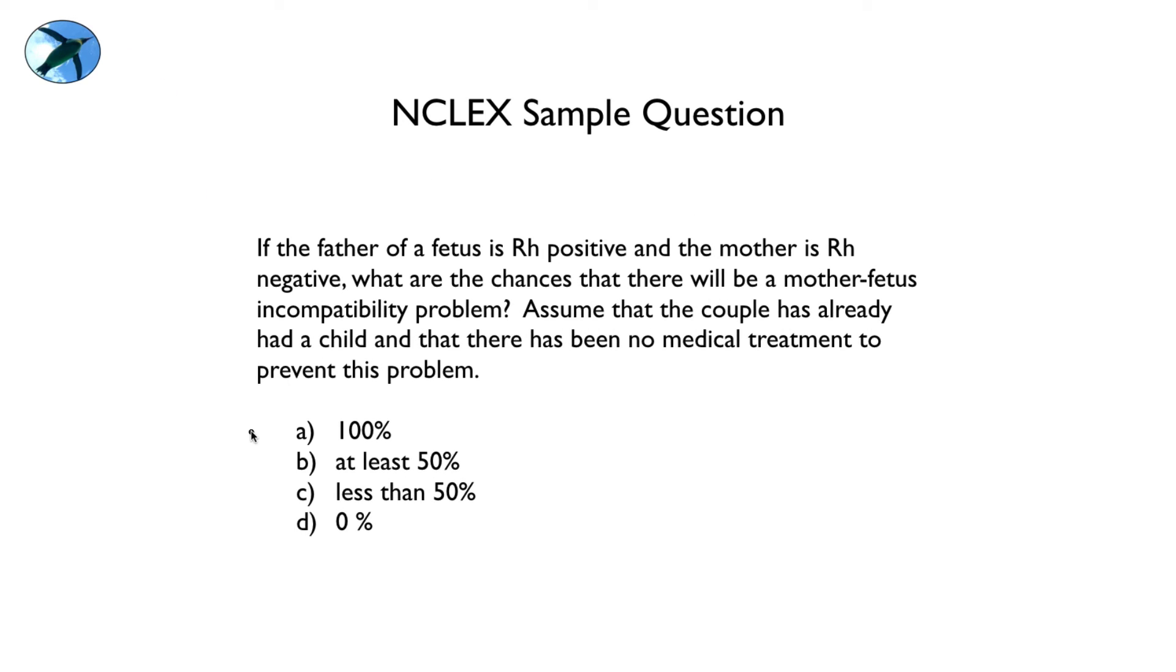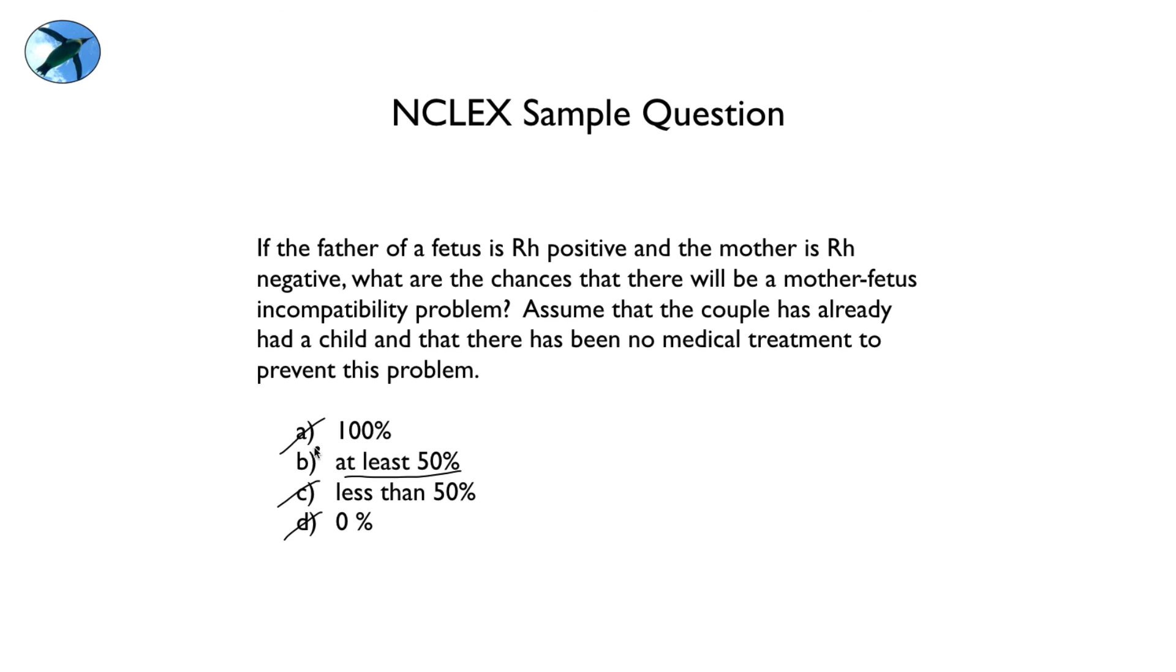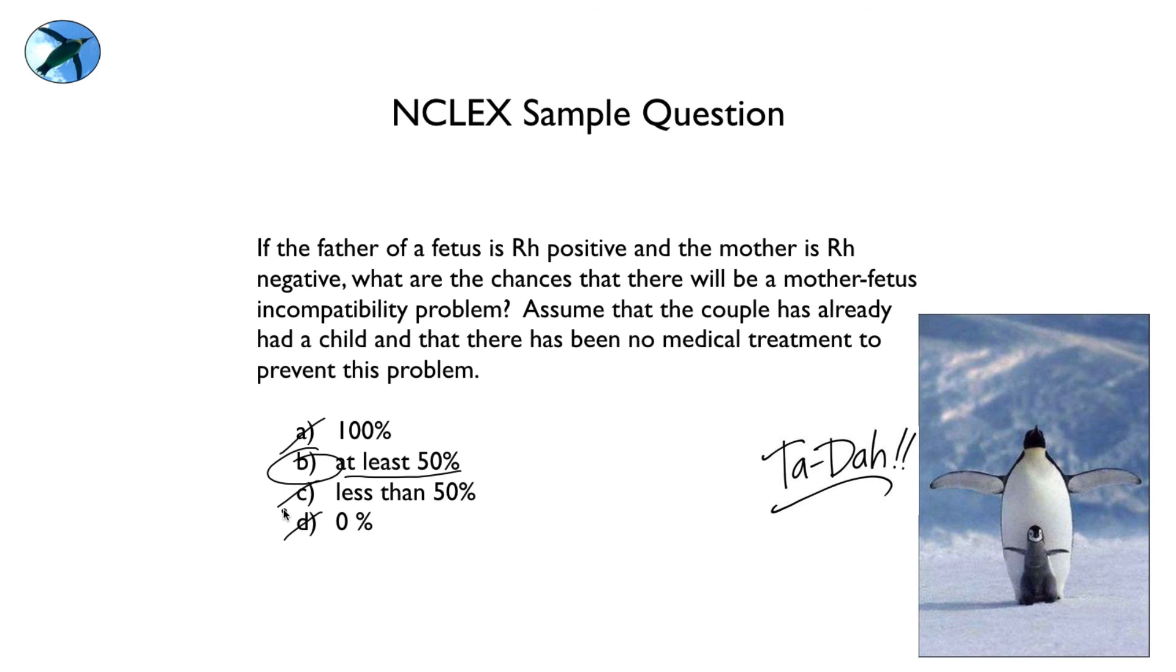Okay, so let's look back at the options again. Hopefully now it's not quite so nasty. We can eliminate 100%, we can eliminate less than 50% because none of the options gave us that. They didn't give us zero either. We have at least 50% as the correct answer because it's 50% or 100% depending upon what the father's actual genotype is. So, ta-da, the answer is B.